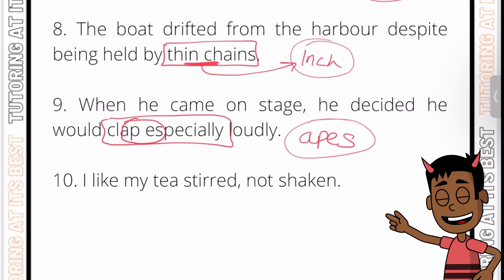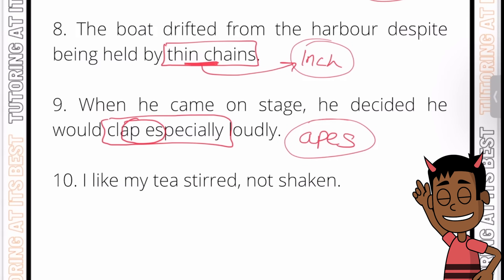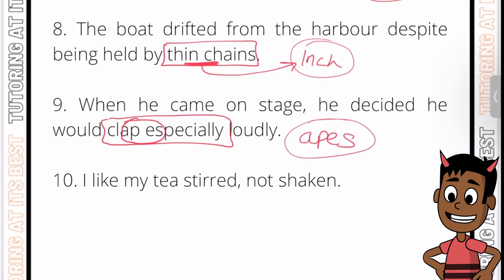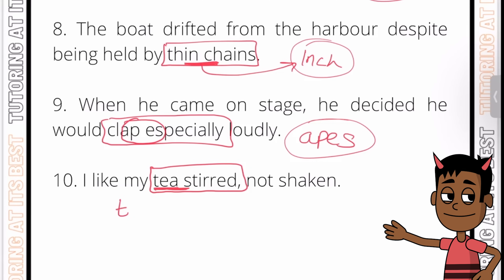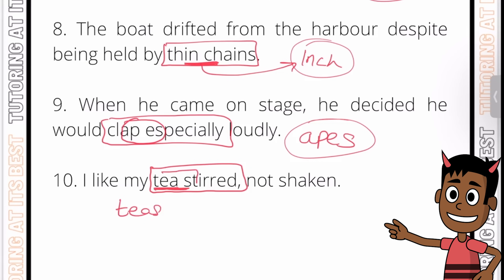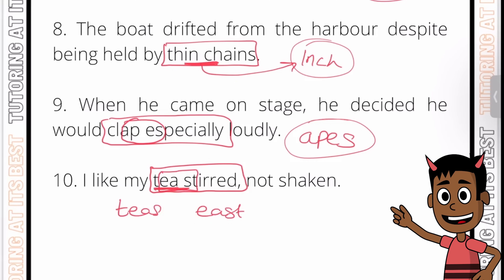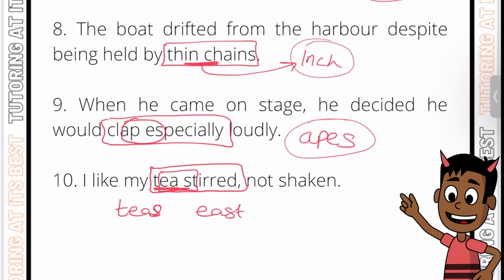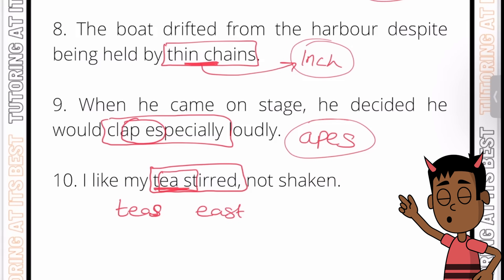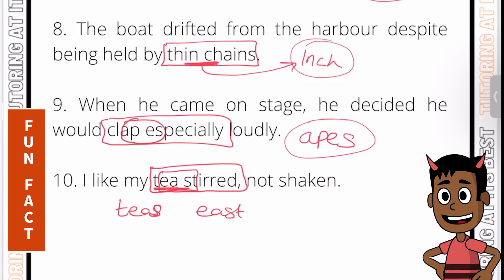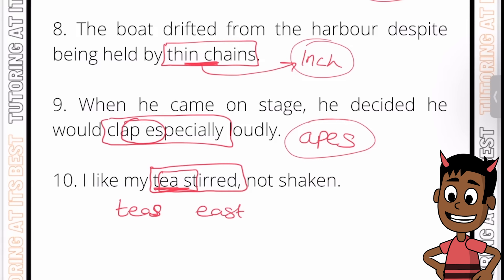The final question: 'I like my tea stirred, not shaken.' This is quite interesting because we've found not one but two answers, and either of them is correct. Going with 'tea' and 'stirred,' the two answers are 'teas' — the first four letters — or 'east' — the second set of four letters. Both 'teas' and 'east' are hidden between 'tea' and 'stirred.' Fun fact: in the UK we drink around 165 million cups of tea every day!